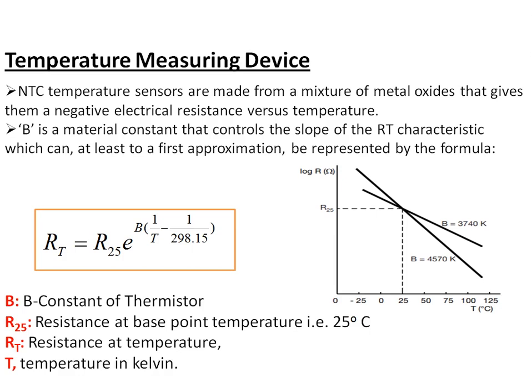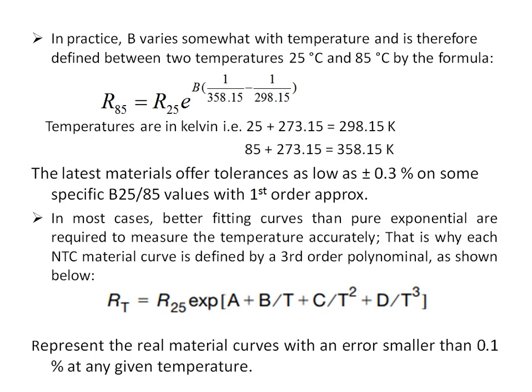The higher the value of the B constant, the steeper the curve, meaning the more sensitive the thermistor. The resistance-temperature relationship using a first-order approximation is given by: R_T = R_25 · e^(B · (1/T − 1/298.15)), where 298.15 is 25°C expressed in Kelvin (obtained by adding 273.15 to 25°C).